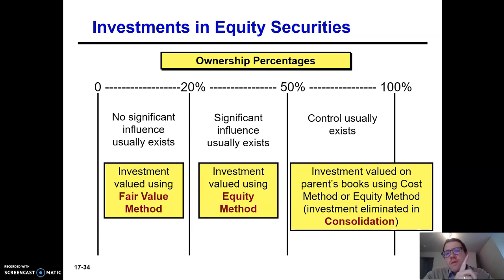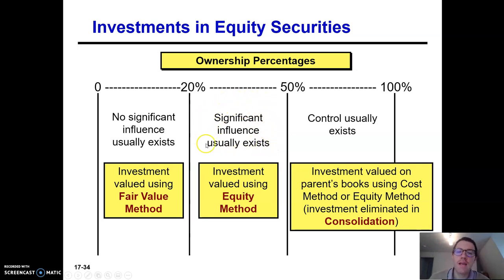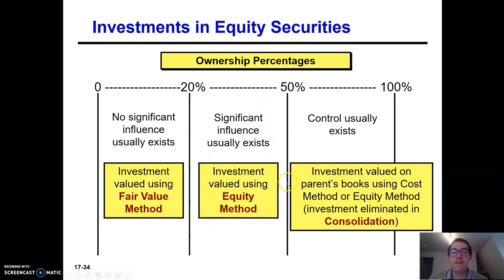The gray area is when you own between 20 and 50% of the stock of another corporation — you usually have significant influence in that case. You don't have complete control, but you have a lot of say if you own 40% of a company's stock, for example. The FASB says you're going to account for that using the equity method, which is very different than the fair value method.